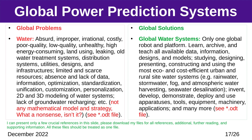Global Problem — Water: absurd, improper, irrational, costly, poor quality, low quality, unhealthy, high-energy consuming, land-using, leaking, old water treatment systems, distribution systems, utilities, designs, and infrastructures; limited and scarce resources; absence and lack of data, information, optimization, standardization, unification, customization, personalization, 2D and 3D modeling of water systems; lack of groundwater recharging, etc. Global Solution — Global Water Systems: learn, archive, and teach all available data, information, designs, and models; study, design, present, construct, and use the most eco- and cost-efficient urban and rural site water systems; invent, develop, demonstrate, deploy, and use apparatuses, tools, equipment, machinery, applications, and many more.